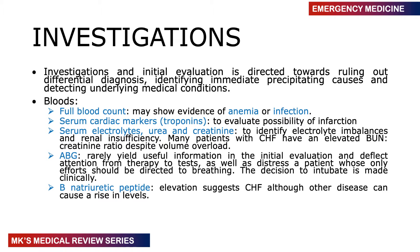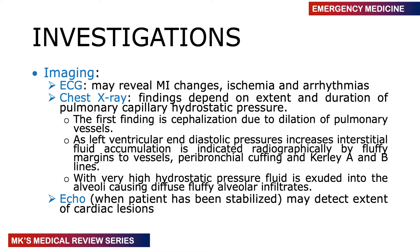Get serum electrolytes, urea, and creatinine to identify electrolyte imbalances and renal insufficiency. Many patients with congestive heart failure will have an elevated BUN-to-creatinine ratio despite high volume overload. ABGs are rarely useful in the initial evaluation and can actually deflect your attention from the patient — the decision to intubate should be based on the patient, not the ABGs. Get natriuretic peptides, which may be elevated pointing towards congestive heart failure, though conditions such as pulmonary embolism can also raise them.